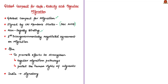It is the first intergovernmentally negotiated agreement for migration, prepared under the United Nations, and covers all dimensions of international migration in a comprehensive manner. It aims to promote efforts to strengthen regular migration pathways and protect the human rights of migrants, as many people have been taking the illegal migration route. India has a historical reluctance to sign international laws and treaties related to migration, but surprisingly, India signed this global compact on migration.